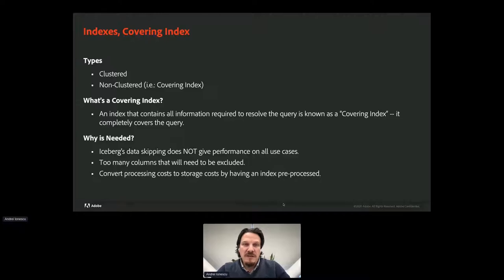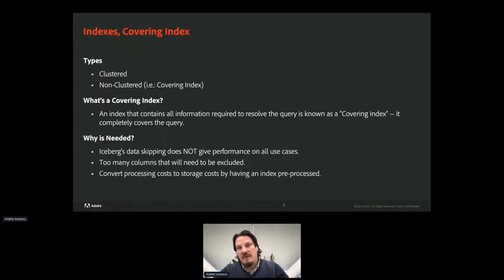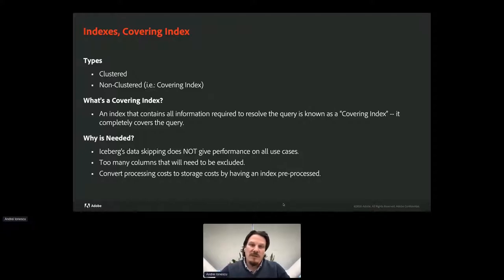A covering index is an index that contains all the information required to resolve the query — it completely covers the query, as its name says. We need it because: first, Iceberg's data skipping mechanism is inefficient in cases where min/max column stats have lots of overlaps; second, in the case of datasets with thousands of columns, filtering out the majority to select only a couple is inefficient; and third, it lets us trade processing cost into storage cost.